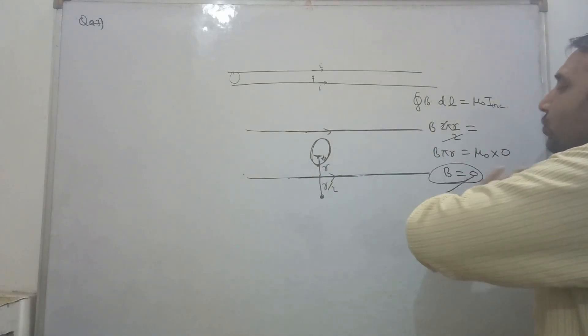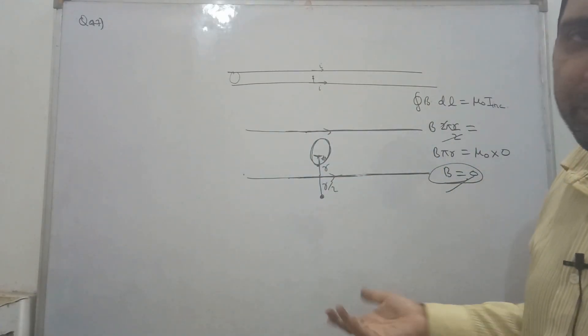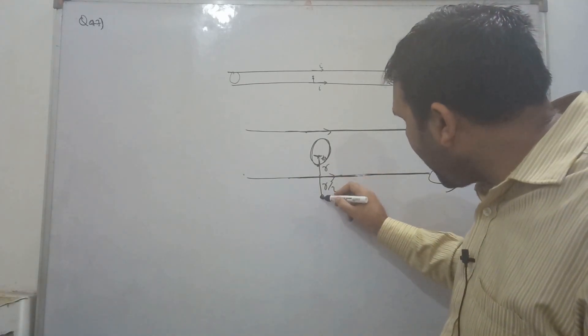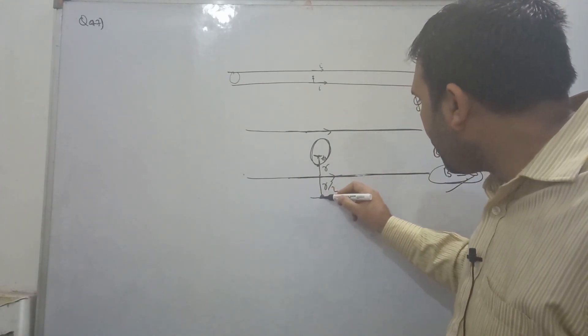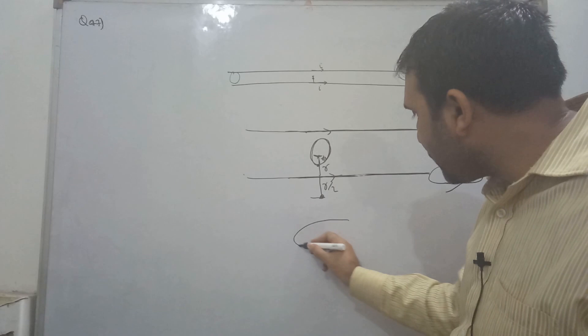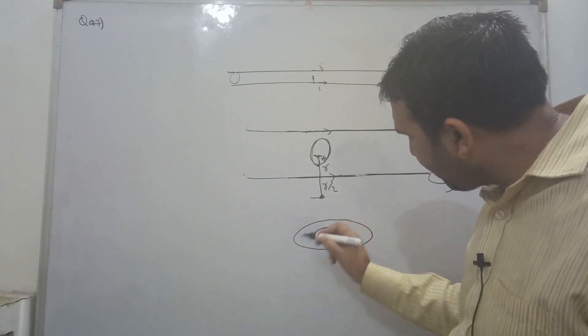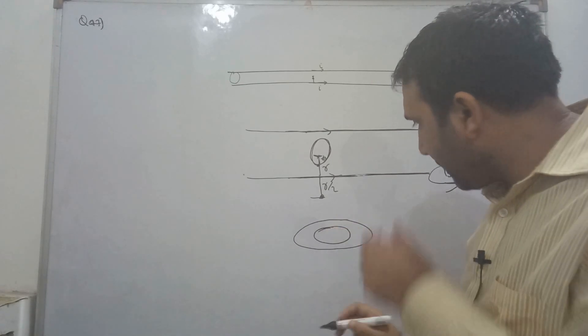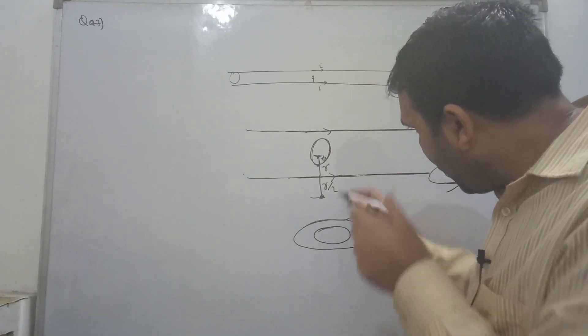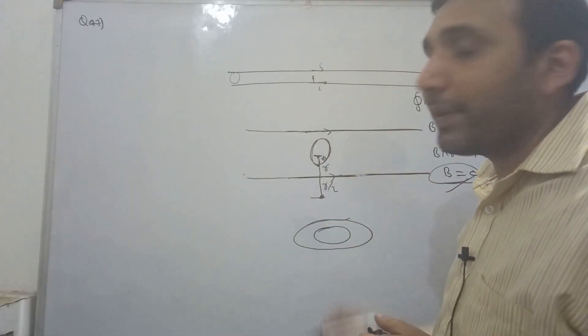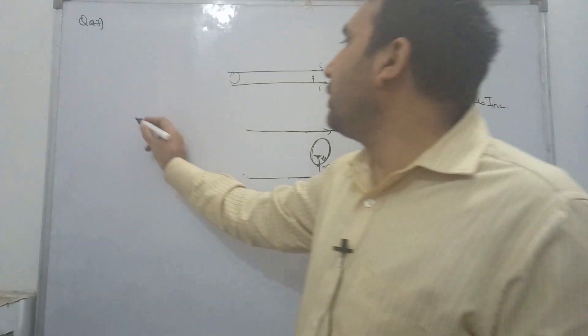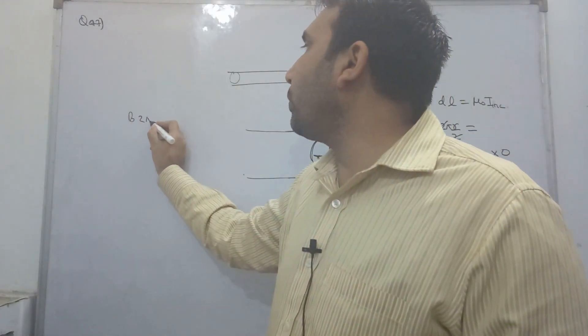There is no magnetic field inside, so we use Ampere's loop. Now here, this is the wire.